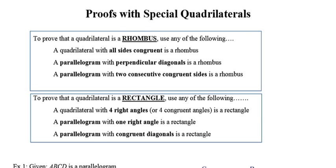In this video, we'll focus on proof writing with special quadrilaterals. In particular, the two that we're going to focus on today are the rhombus and the rectangle.